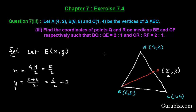We are given that there is a point Q on median BE, such that BQ to QE is equal to 2 to 1. So we shall write 2 here and 1 here, and now we shall find the coordinates of Q.